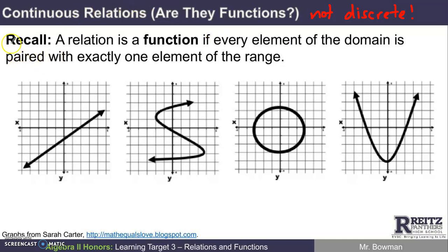The goal of this screencast is to determine whether these things are functions. Here's a recall from the screencast 3.1: we said a relation is a function if every element of the domain is paired with exactly one element of the range. I want to run through some of these examples with you. We'll take these from left to right. Let's look at this linear graph. What I need to decide is, does every x have only one y?